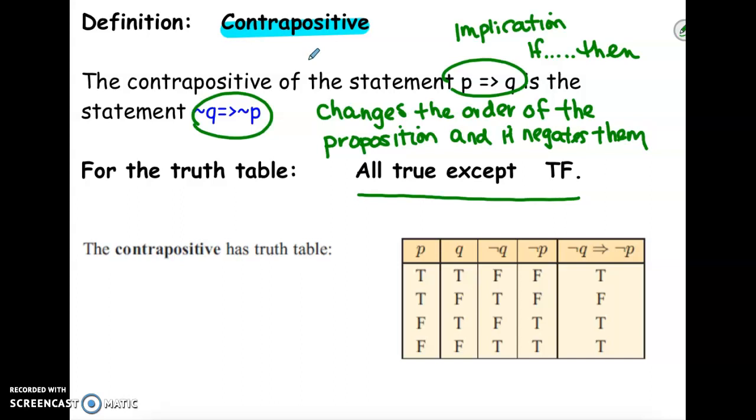So we're looking at not Q and not P, so those have already been negated, and we're looking for all to be true except for true-false. So look at this row right here. It's true and then it's false, so that's considered false. The rest of them will be true.